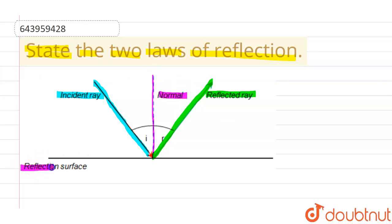So the two laws of reflection: the first one says that the angle of incidence is equals to angle of reflection. That means the angle made by the incident ray with the normal is known as angle of incidence.